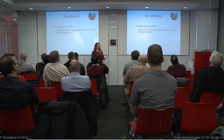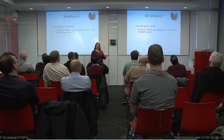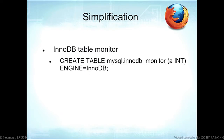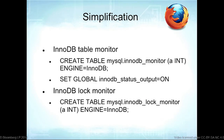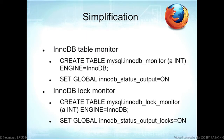Some things are being simplified. The InnoDB table monitor used to require creating a special table to spew output into the error log, and you had to remember to drop it to turn it off. Now it's just 'SET GLOBAL innodb_status_output = ON' — a dynamic variable, which makes sense since you want it while the server's running. Similarly, the InnoDB lock monitor is now 'innodb_status_output_locks = ON'. They're standardizing everything.